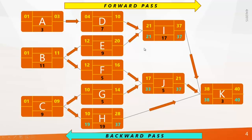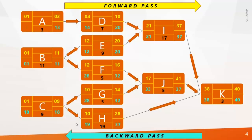Continuing the Backward Pass to the third level, we apply the same equations to find Late Start and Late Finish for all remaining activities. For Activity C, which connects to G and H with Late Starts of 28 and 19 — in the Backward Pass we choose the shortest value and deduct 1, so Late Finish of C = 19 − 1 = 18, and Late Start of C = 18 − 9 + 1 = 10. Same calculations apply for B and A.